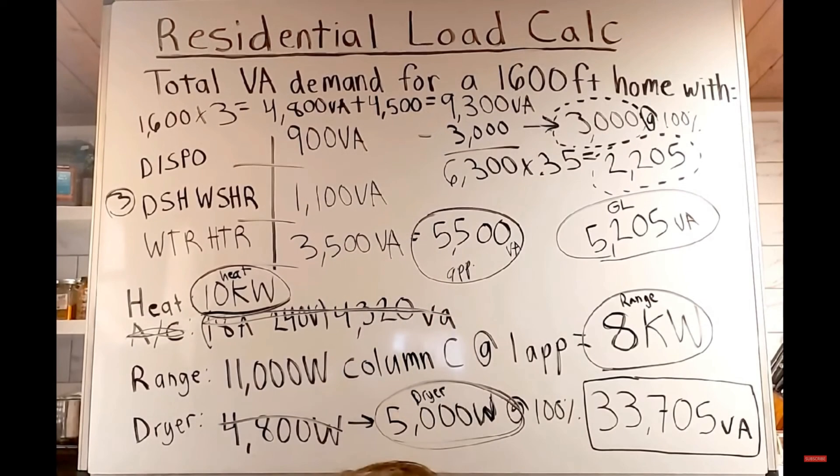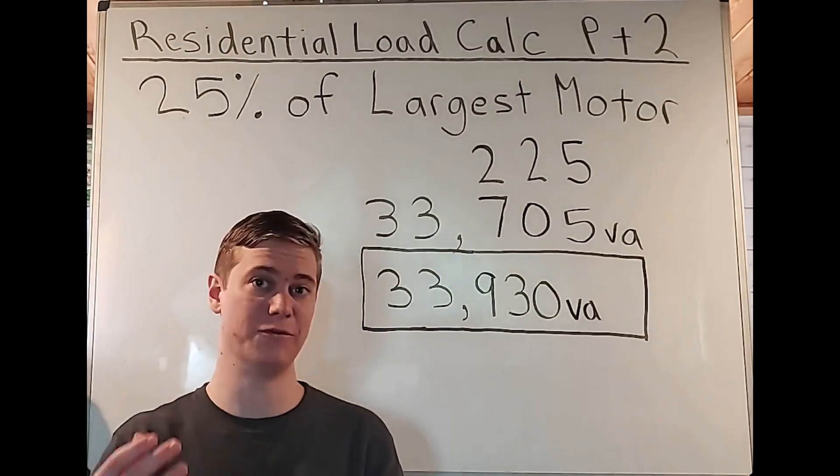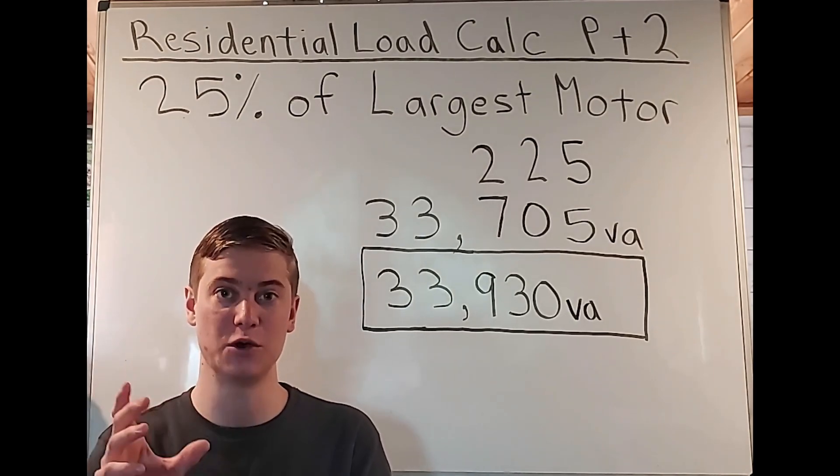So we're going to be taking the 900 volt amps from the disposal. And we're just going to multiply that by 25%, which is 0.25. And we're going to get 225 volt amps. And now if we look back at the screenshot, since our final answer for everything that we did in that video was 33,705, we get 33,930 volt amps. Now this is the answer for the total demanded load for that dwelling.